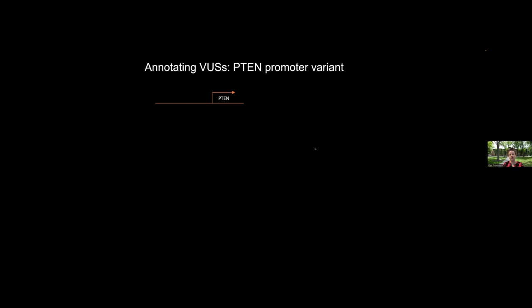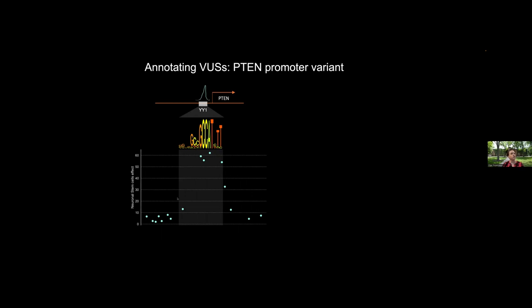We took those ClinVar variants of uncertain significance and applied a very conservative cutoff, experimentally defined, for what we mean by expression level disruption. For 268 of those variants, CLEVER predicts an expression level disruption in at least one cell type. When we looked at them, a number of these very high-impact variants were centered around the PTEN tumor suppressor gene — we were interested not so much for its role in cancer, but for its involvement in autism, which we have quite a bit of interest in.